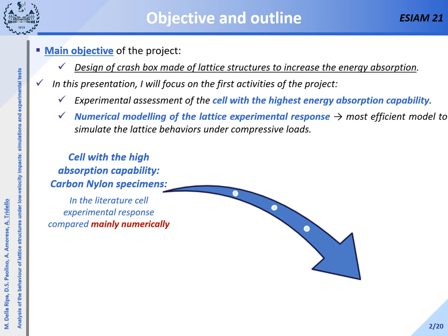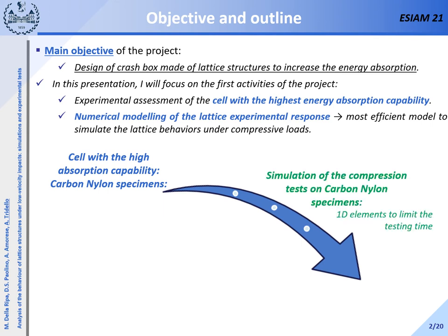At first, the cell with the highest absorption capabilities is assessed through quasi-static compressive tests on lattice structure specimens made of carbon nylon. Thereafter, compressive tests are simulated using 1D elements to obtain the solution in a limited computation time without a loss of accuracy. Through this step, the 1D model is tuned.